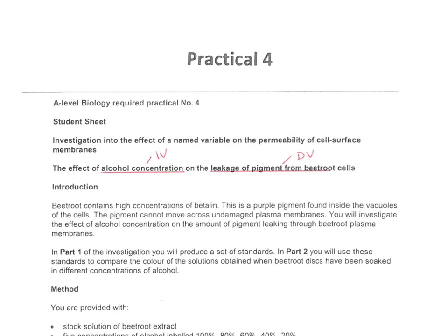This is the video for Required Practical 4, where you've got to investigate the effect of a named variable on the permeability of cell surface membranes. In this practical, we've chosen alcohol concentration, but it could quite easily be temperature effect on permeability or pH effect on permeability of cell surface membranes.